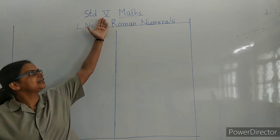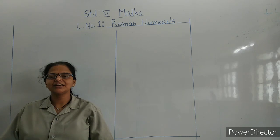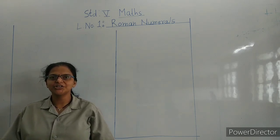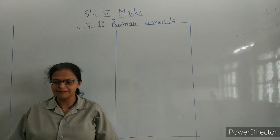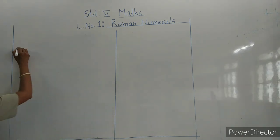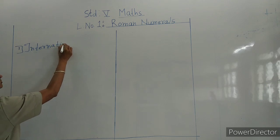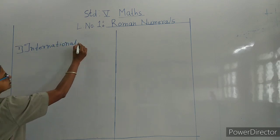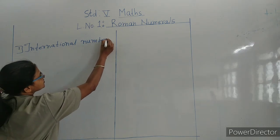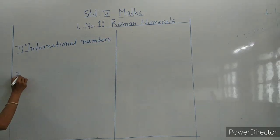So let's start 5th standard mathematics digital class. In previous year, we have learned two types of numbers: international numbers and Devanagari numbers.